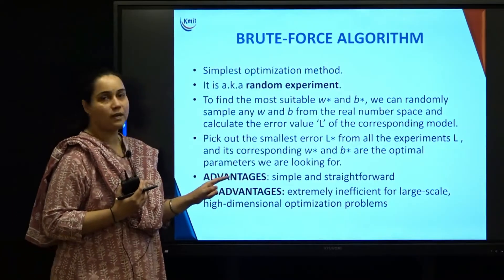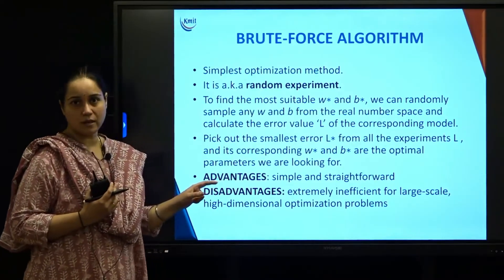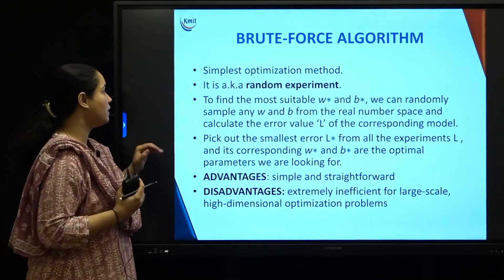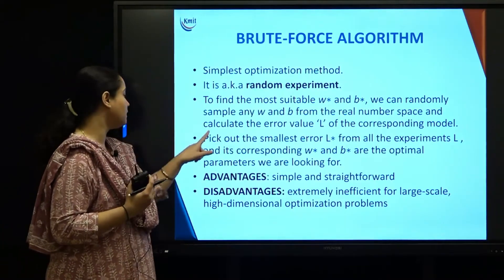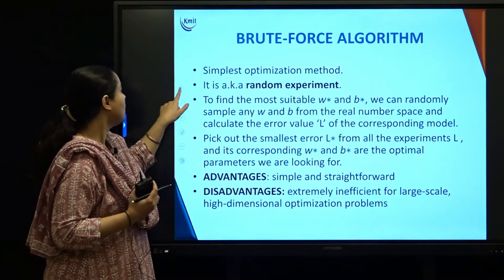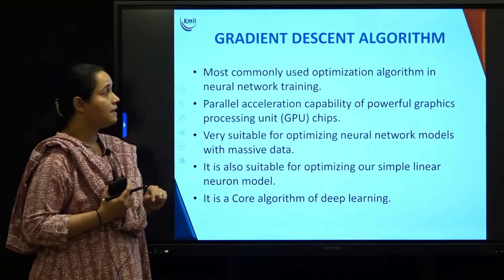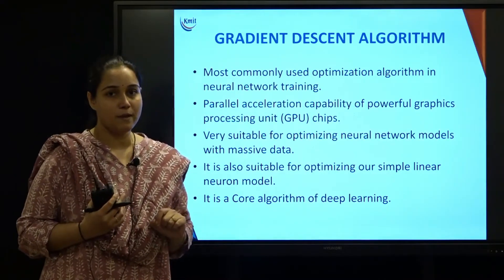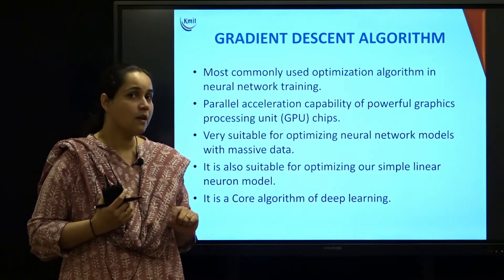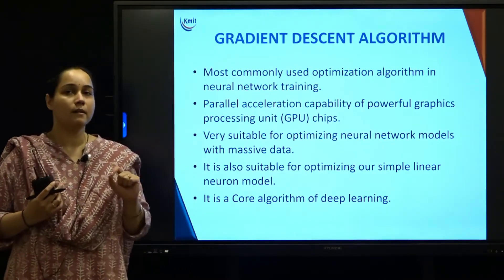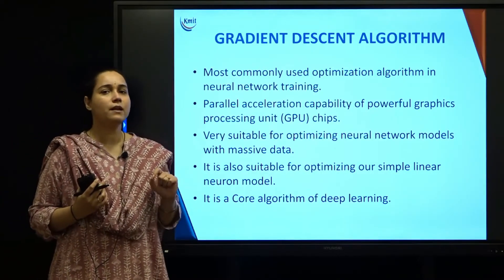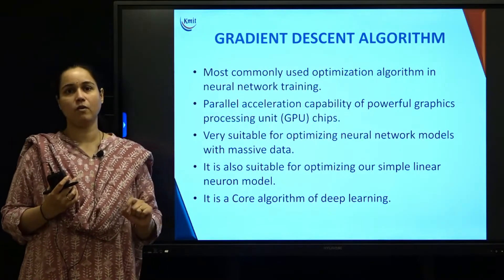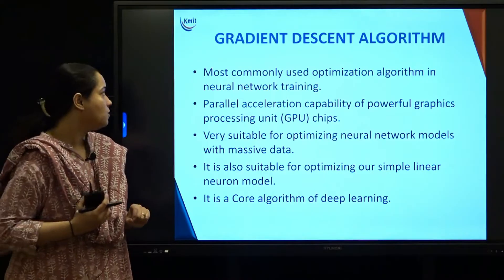This was the first kind of optimization algorithm — the brute force algorithm — and we've seen its advantages and disadvantages. Now let us dive into the important aspect of optimization: the gradient descent algorithm, which I call the backbone algorithm for deep learning.